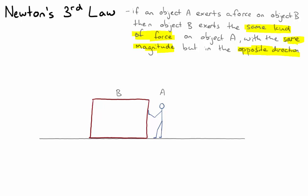So same kind means if one object pushes another, that object pushes back on the first. If one object exerts a gravitational pull on another, the second object will apply a gravitational force on the first, but in the opposite direction.